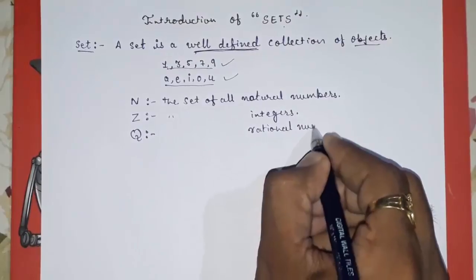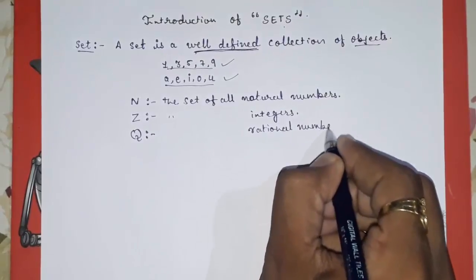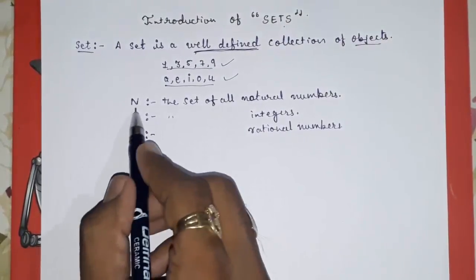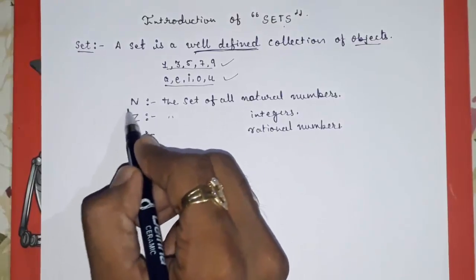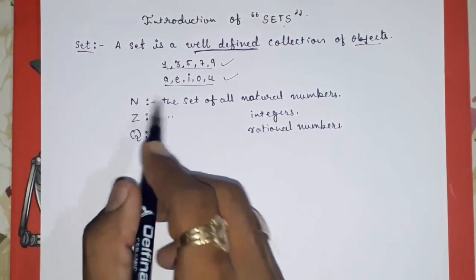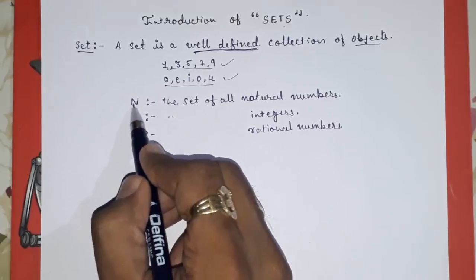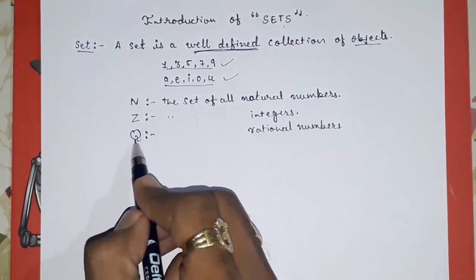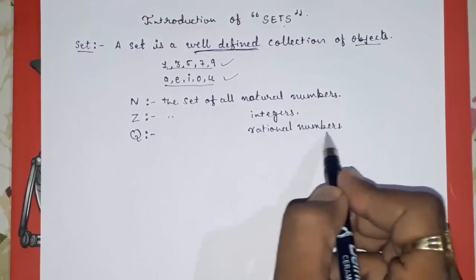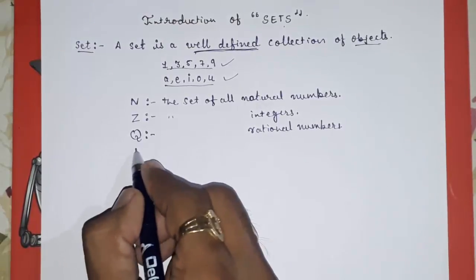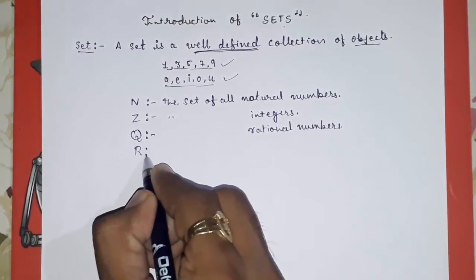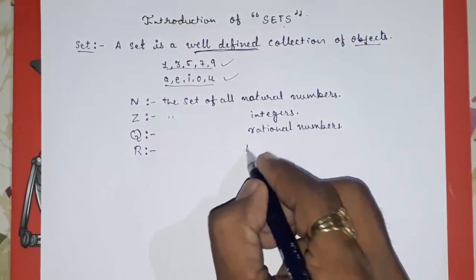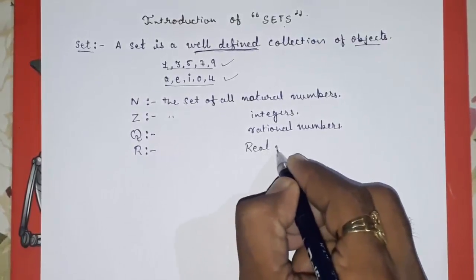You have to keep all these sets in mind because in problems they will refer to them by name only, and you have to write directly. Capital N means natural numbers, Z means integers, Q means rational numbers, and capital R means the set of real numbers.